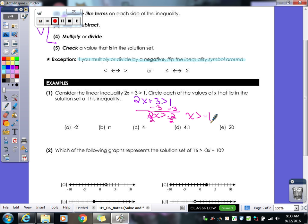So to answer the question, I've got to find all of the numbers that are greater than negative 1. Is negative 2 greater than negative 1? No. Is pi, 4? How about 4.1? 20? Yes. So b, c, d, and e would all be in the solution set.